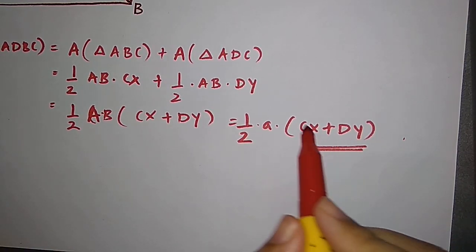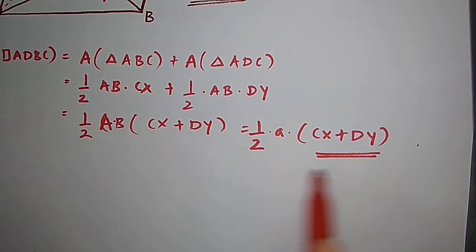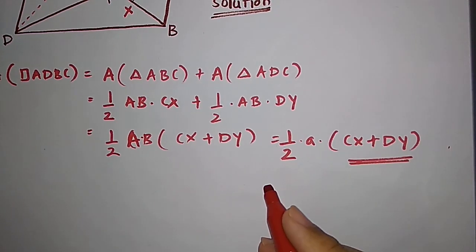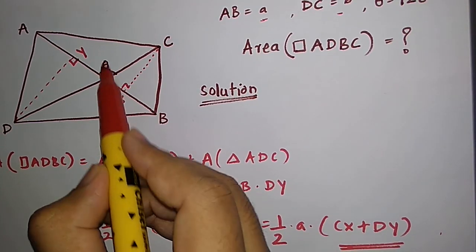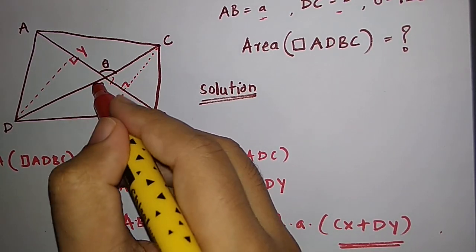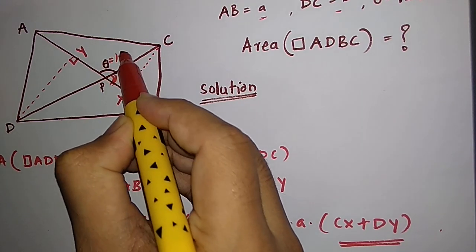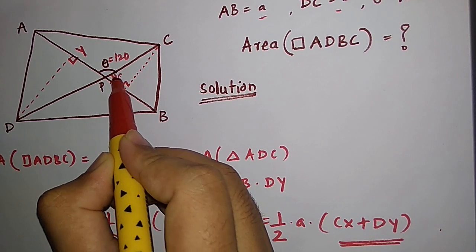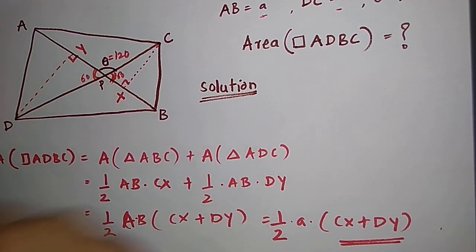This is where the angle comes into the picture. The angle between the diagonals is theta, which is 120°. Since it lies on a straight line, the supplementary angle must be 180 minus 120, which is 60°. Similarly, the other angle is also 60°.